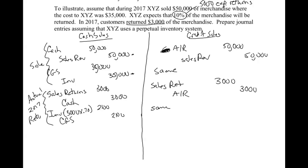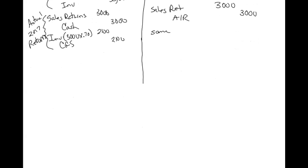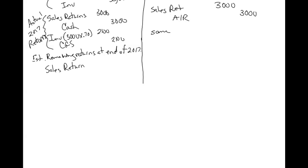The next thing we need to do is account for the fact that they expect $2,000 more in returns. Remember, expected returns were $5,000 and they've already returned $3,000, so we expect $2,000 more. This is an adjusting entry at the end of 2017. We'll record sales returns for $2,000, and then we call the credit a refund liability for $2,000.